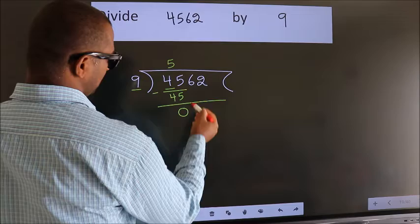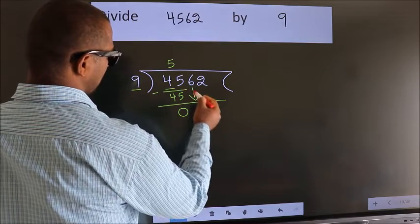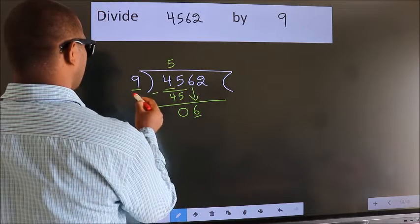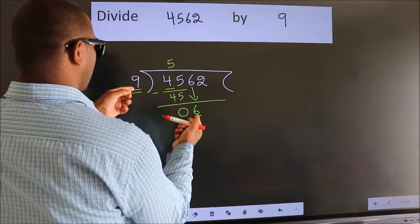After this, bring down the next number, so 6 comes down here. We have 6, and 9. 6 is smaller than 9.